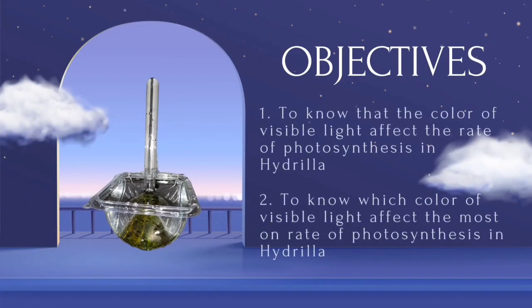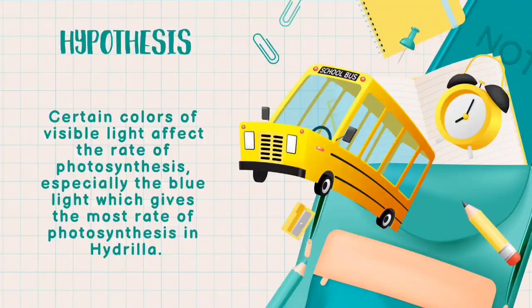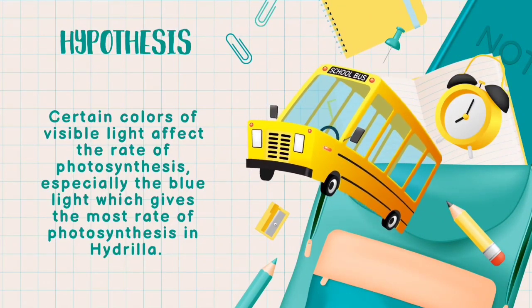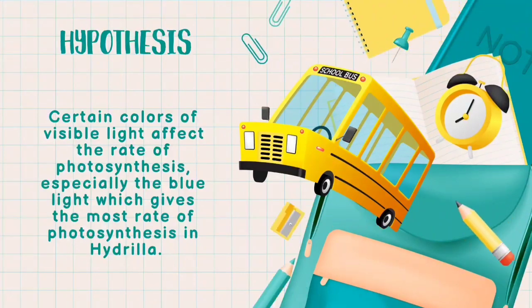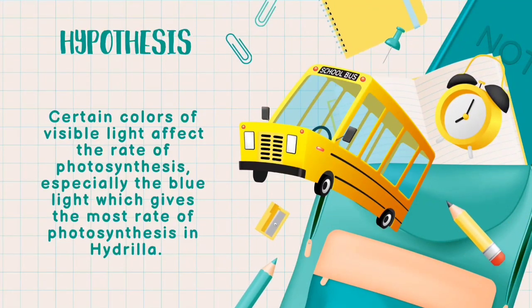Objectives: To know that the color of visible light affects the rate of photosynthesis in Hydrilla, and to know which color of visible light affects the most on the rate of photosynthesis in Hydrilla. Hypothesis: Certain colors of visible light affect the rate of photosynthesis, especially blue light, which gives the most rate of photosynthesis in Hydrilla.